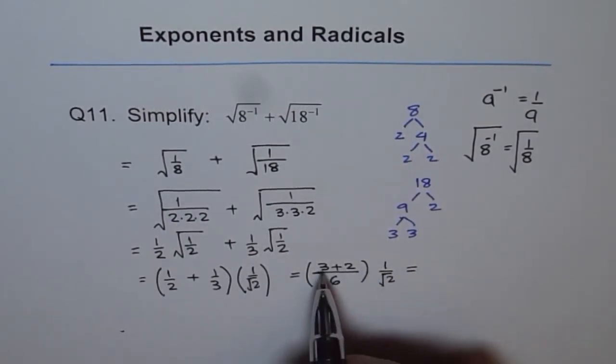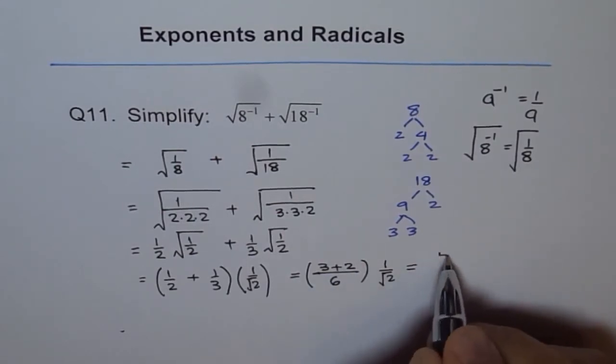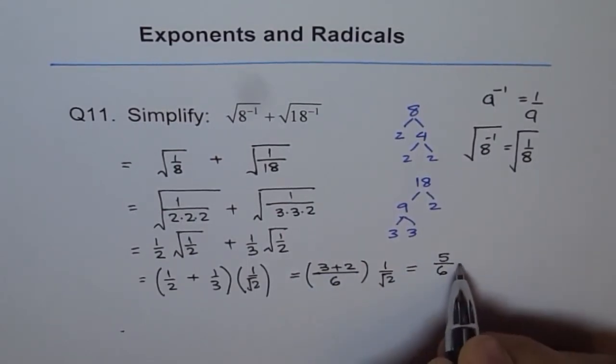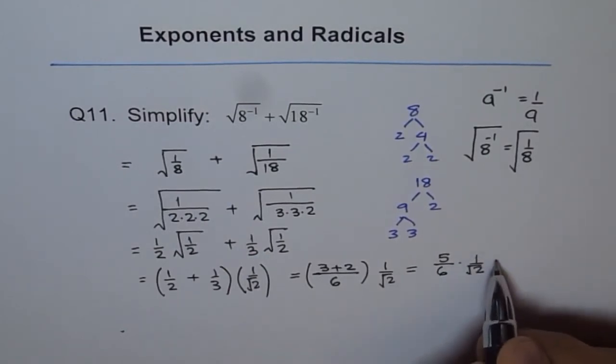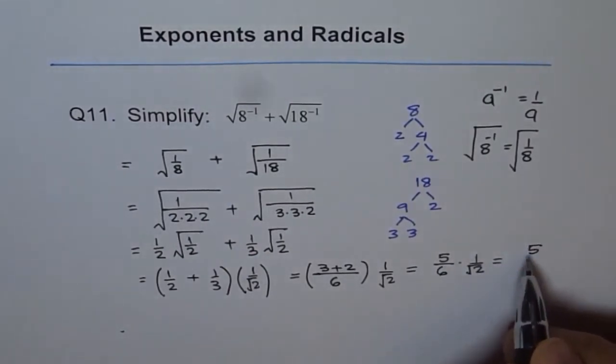And that is 1 over square root of 2. So I can write this as 3 plus 2 is 5. So 5 over 6 times 1 over square root 2. So that is our answer which can also be written as 5 over 6 square root 2.